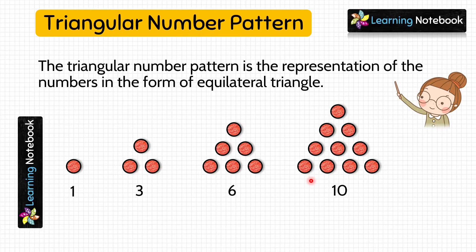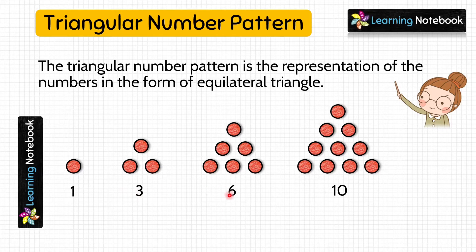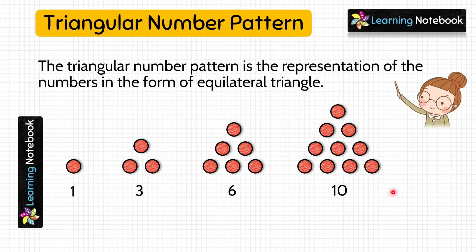Students, the first number in the triangular number pattern is 1, the second number is 3, the third number is 6, and the fourth number is 10. Now, can you continue with this triangular number pattern and tell me the fifth number in this pattern? Write in the comments box.